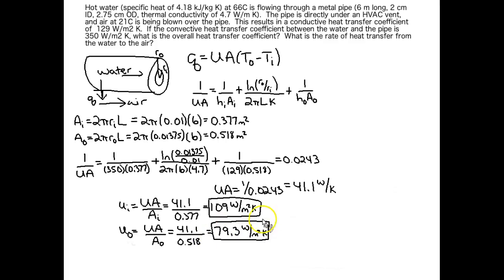Alright. Now you can see that UI is quite a bit larger than UO. And that makes sense because the inside area is smaller than the outside area. And if we want the quantity UA to be the same, regardless of where our area is, our inside overall heat transfer coefficient has to be bigger to compensate for the smaller area. Regardless of if you're using UI or UO, you have to pair it with the correct area. And when you do, you're going to get, for this problem, UA equals 41.1.